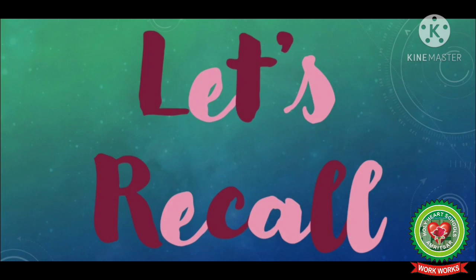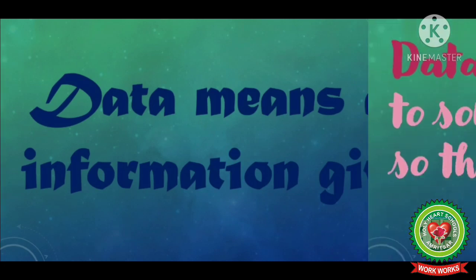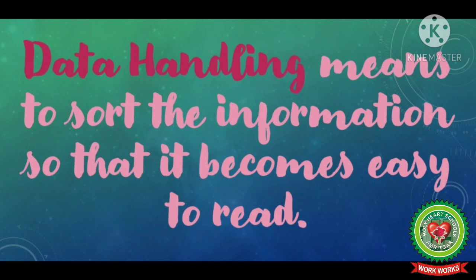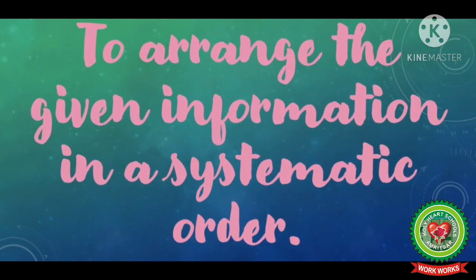Now let us recall what we have done and what we have learnt. First of all, what is data? Data means any information given but in an unsorted way. Now what is data handling? Data handling means to sort the information so that it becomes easy to read — to arrange it in a way so that it can be easy to read. The first step is to observe the information properly, and for data handling we have to arrange the given information in a systematic order. Once we observe the information, we sort it in a proper and systematic order, and like this we will be able to read it easily.